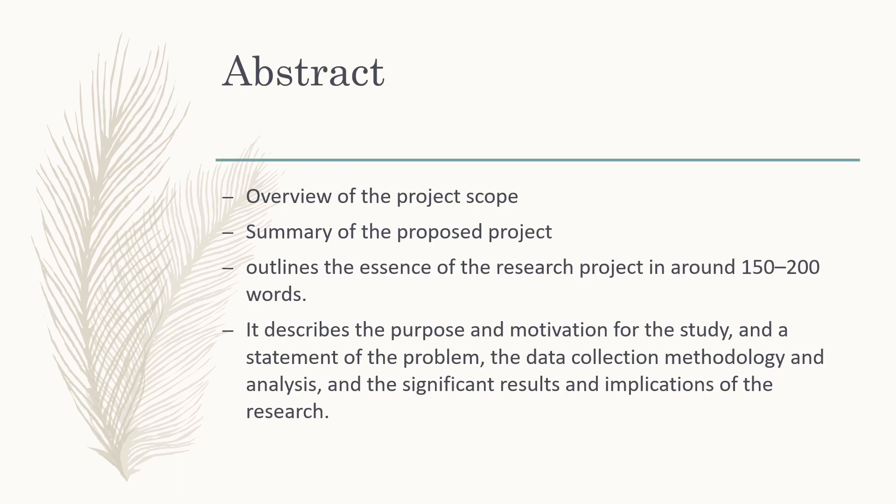The next part is writing the abstract. The abstract is optional — some faculties might not require it, but some may. In the abstract, you should put a summary of your proposal, whereby you overview the project scope, summarize the project purpose, and outline the essence of the project in around 150 to 300 words. The abstract should describe the purpose and motivation for the study, a statement of the problem, data collection methodology and analysis, and significant results and implications of the research.